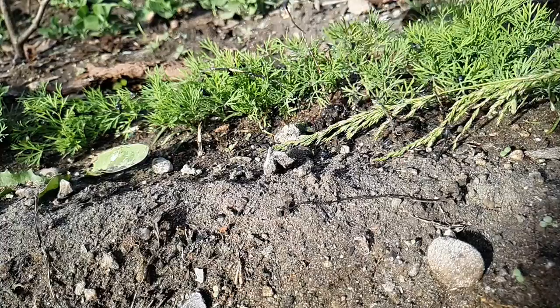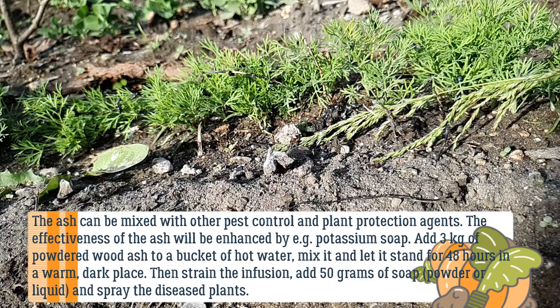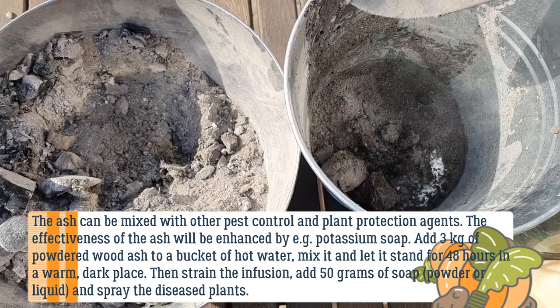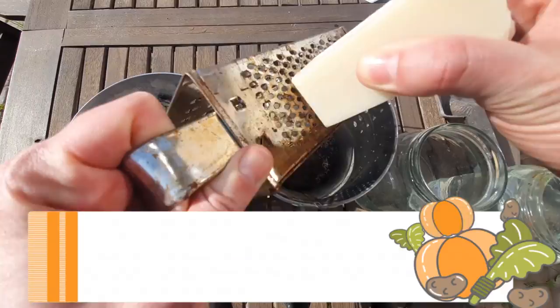The effectiveness of ash can be enhanced by combining it with, for example, potassium soap. Add 3 kilograms of powdered wood ash to a bucket of hot water, mix it, and let it stand for 48 hours in a warm, dark place. Then strain the infusion, add 50 grams of soap powder or liquid, and spray the diseased plants.